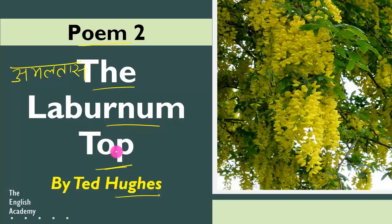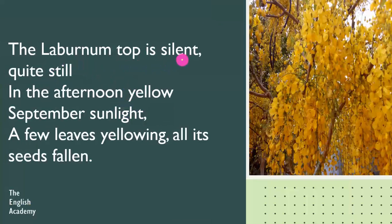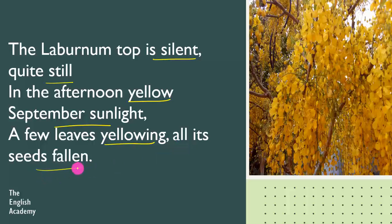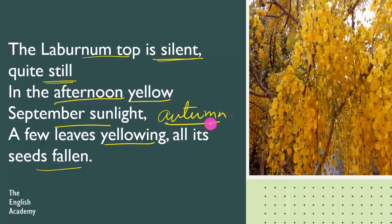This poem is a very good poem and we will discuss the difficult word meanings. We will discuss the poem. September ka mahinah hai — that means autumn season chal raha hai, and the poem mein bright sunlight hai.